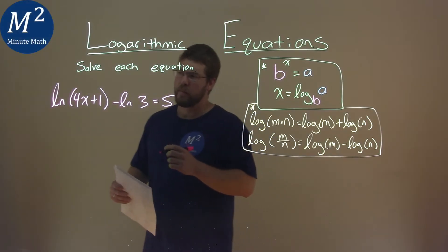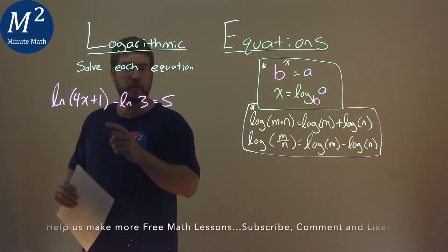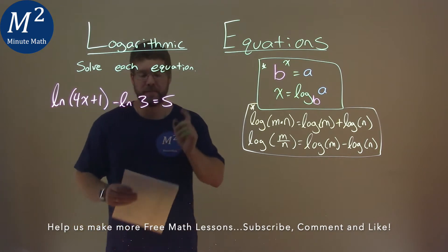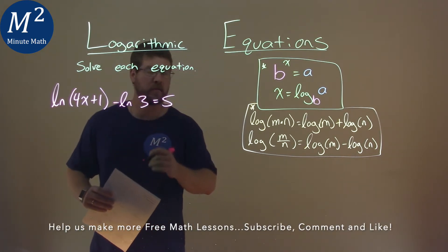We're given this problem right here: natural log of 4x plus 1 minus natural log of 3, that's equal to 5, and we're going to solve this equation.